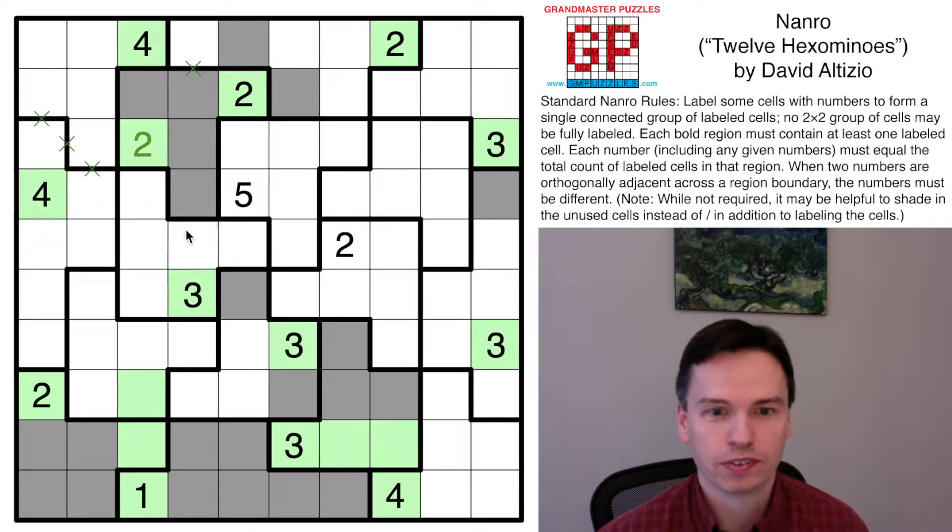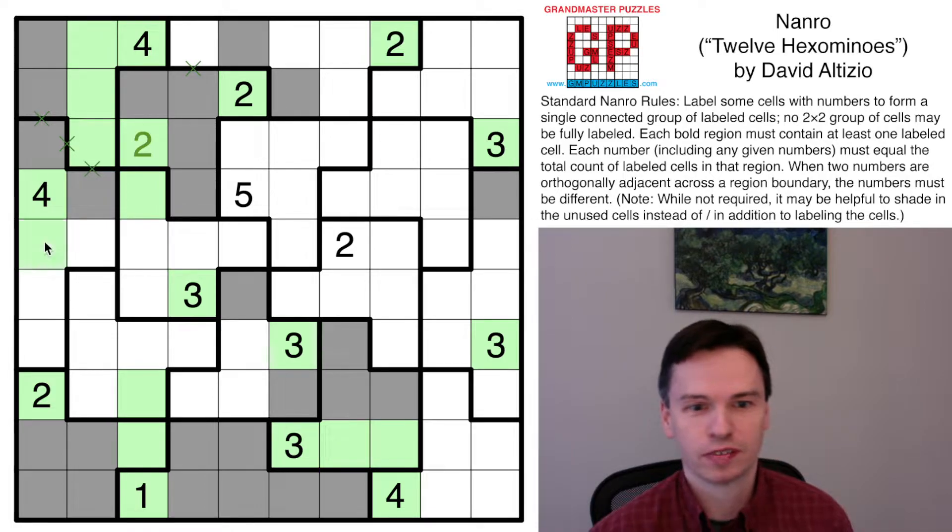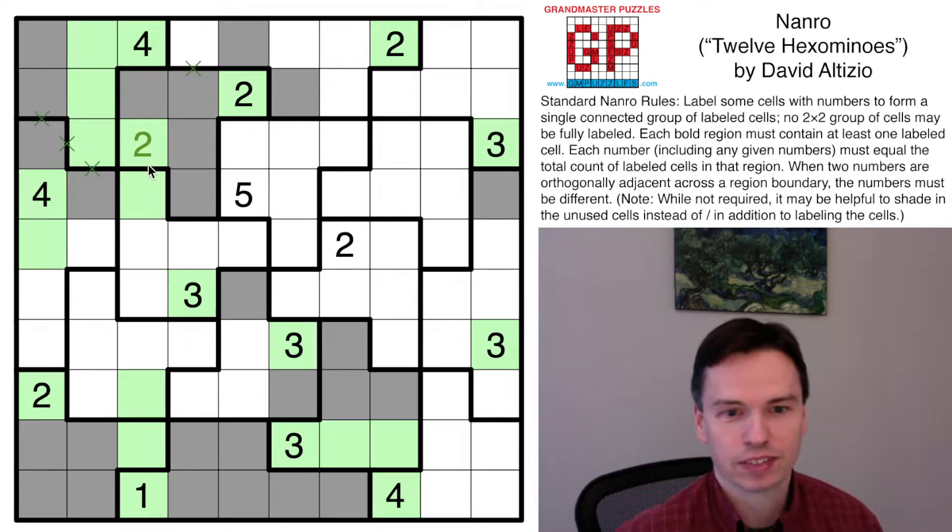And marking all those in, I do connect into this three group like so, but this four now has to come this way to stay connected. And these get marked off. This gets marked in. This looks like an OK start.